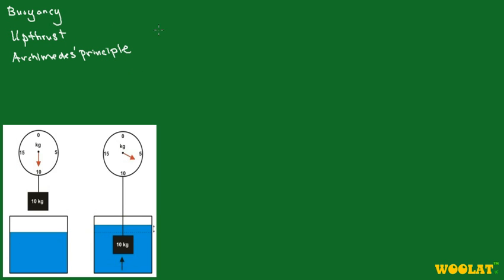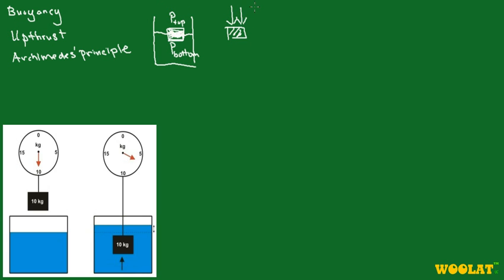So what causes upthrust? Let's say you place an object inside some water. You have an object that's floating inside water — it could have been any fluid, but let's take it as water. Now the pressure at the top is different from the pressure at the bottom, simply because the pressure at the top is exposed to atmospheric pressure. So the object in the fluid is being pressed downwards due to atmospheric pressure, and you also have the upward pressure due to the fluid.